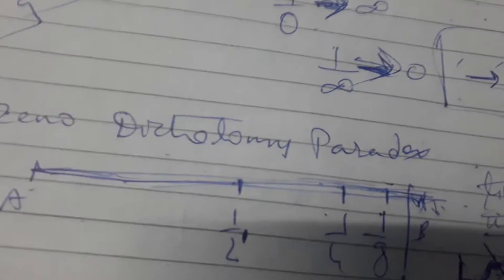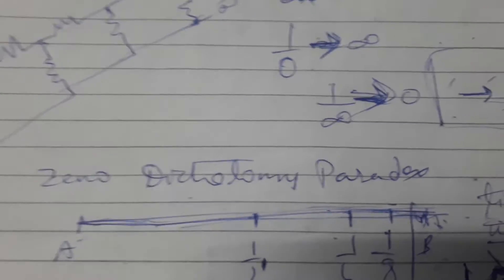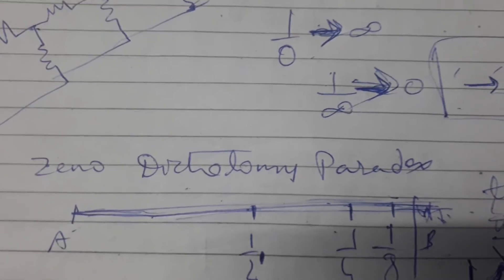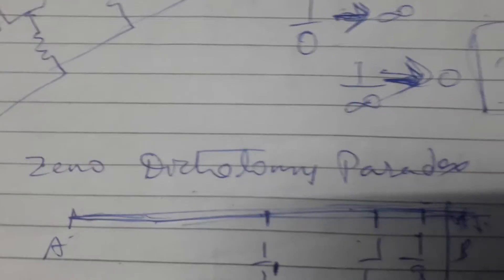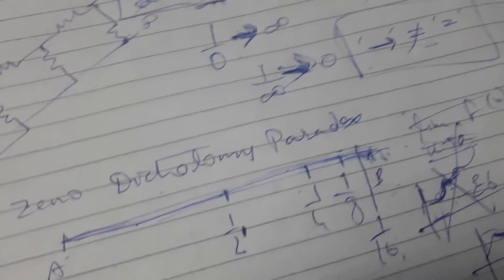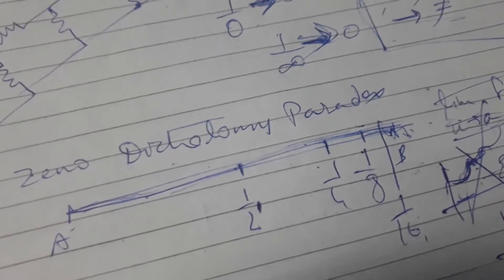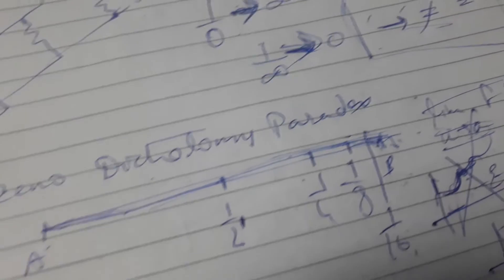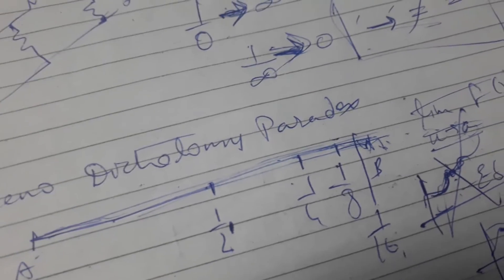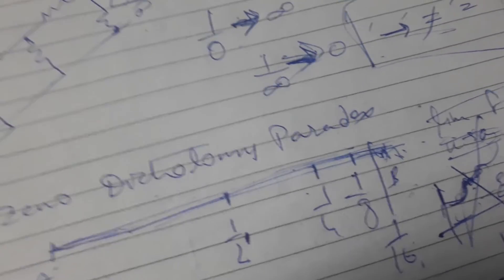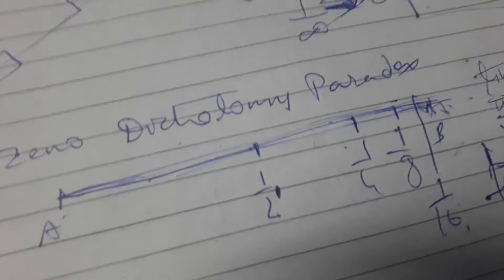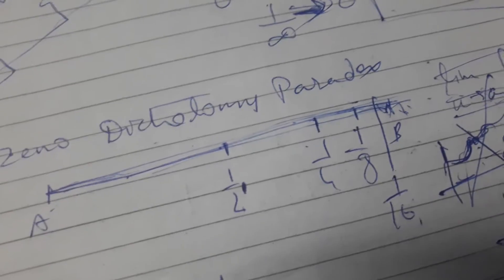One of the paradoxes I find very interesting is Zeno's Dichotomy Paradox. Very few people know of this, and it's not given much importance, but I think it's a very good paradox. Just think — Zeno was pondering these things sitting back in his home, so far back in history. Say we want to reach from point A to point B.